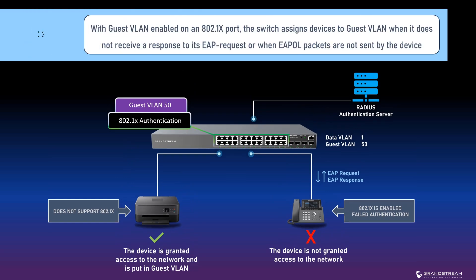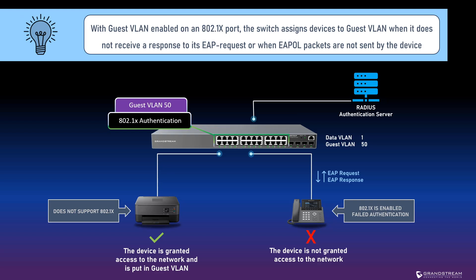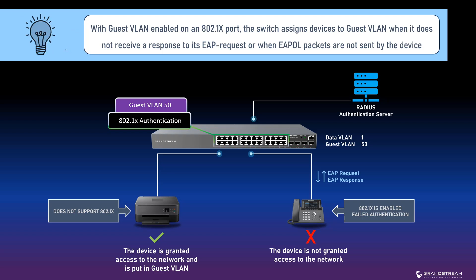This summarizes the process used by the switch to determine if an 802.1x capable device should be assigned to Guest VLAN or denied network access. With Guest VLAN enabled, the switch assigns devices to Guest VLAN when it does not receive a response to its EAP request or when EAPOL packets are not sent by the device. If an EAPOL packet is detected after placing the switch port on the Guest VLAN, the port reverts to an unauthorized state and restarts the 802.1x authentication process.